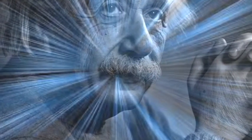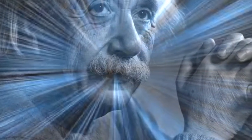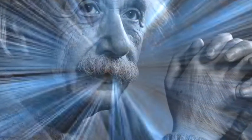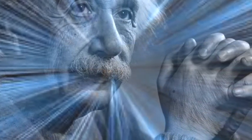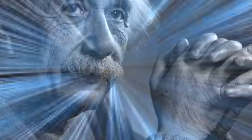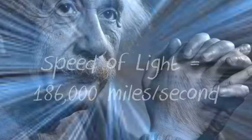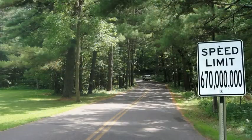Albert Einstein himself figured out that nothing can travel faster than the speed of light. How fast is this exactly? Light travels 186,000 miles every second — using more familiar units, this translates into over 670 million miles per hour. That is the speed limit for our universe.